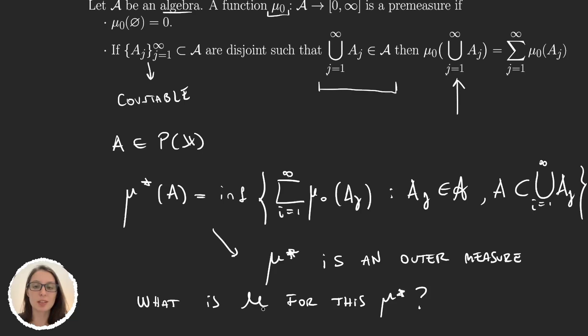Well, it turns out, we will see in the next video, but it turns out that the μ* measurable sets are very simple, very easy to calculate for μ* outer measures defined from premeasures. We will see more about this in the next video.